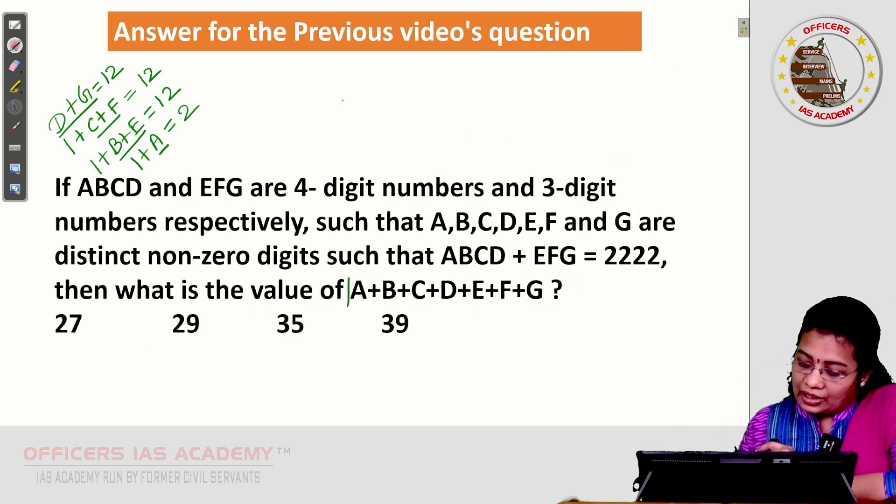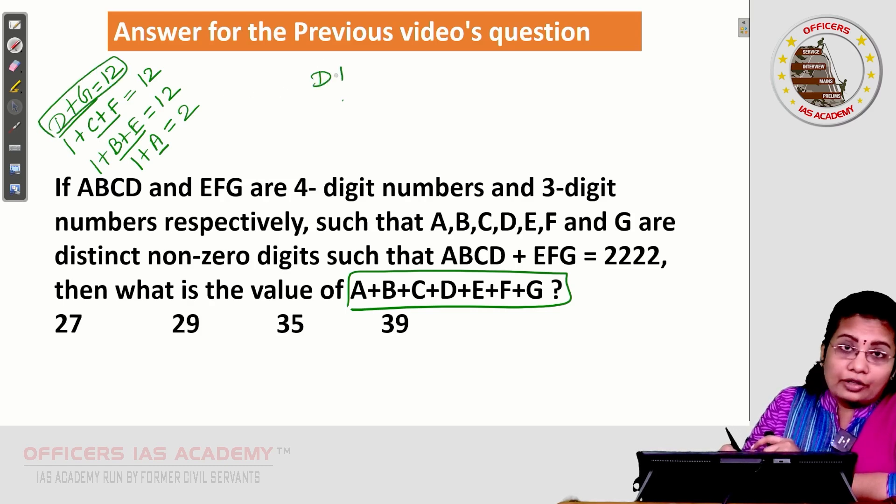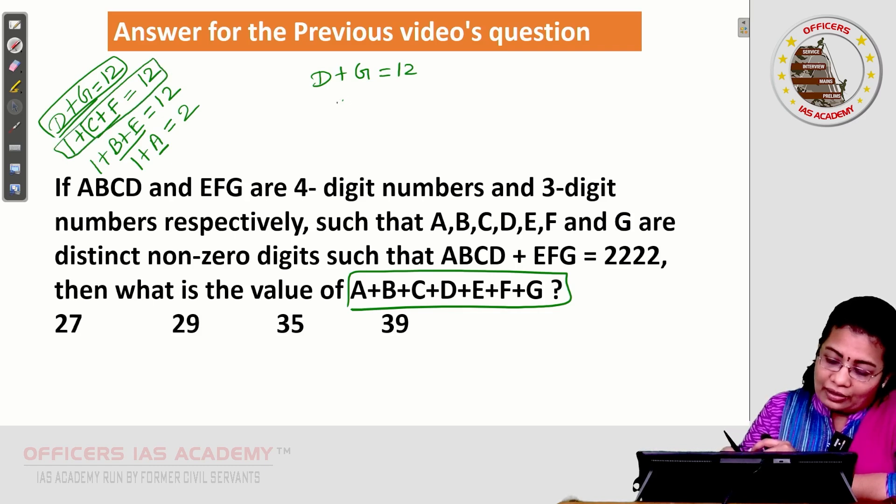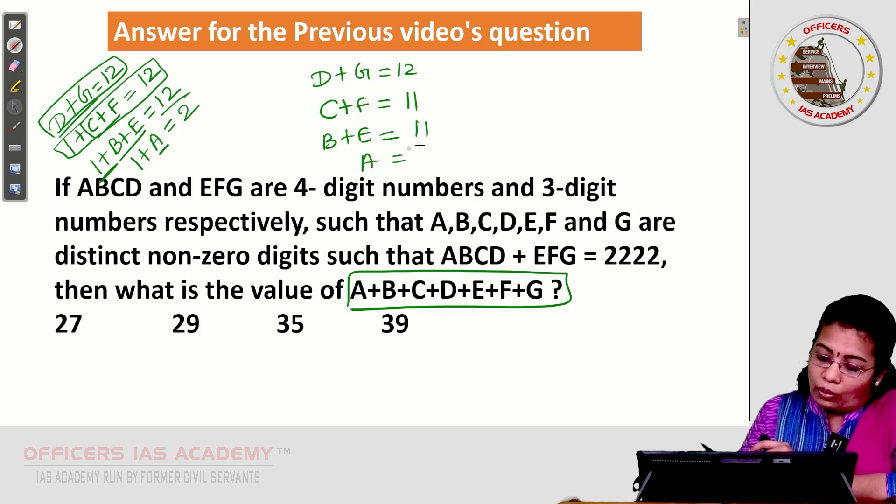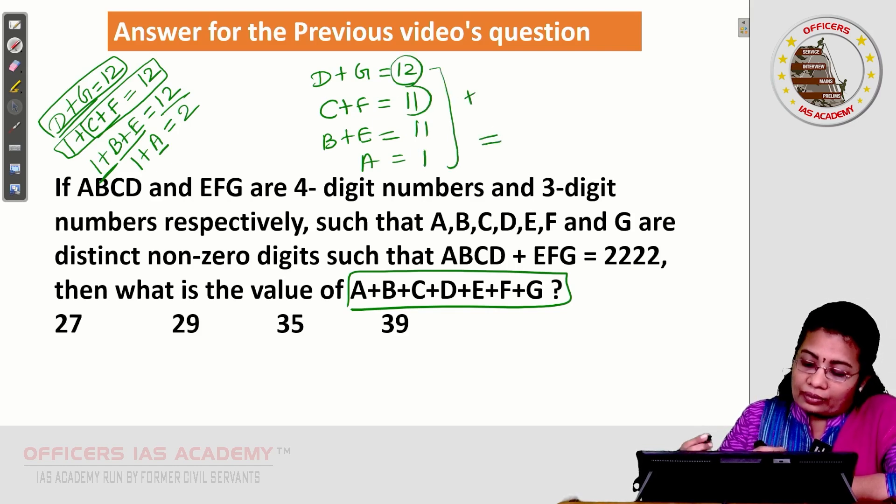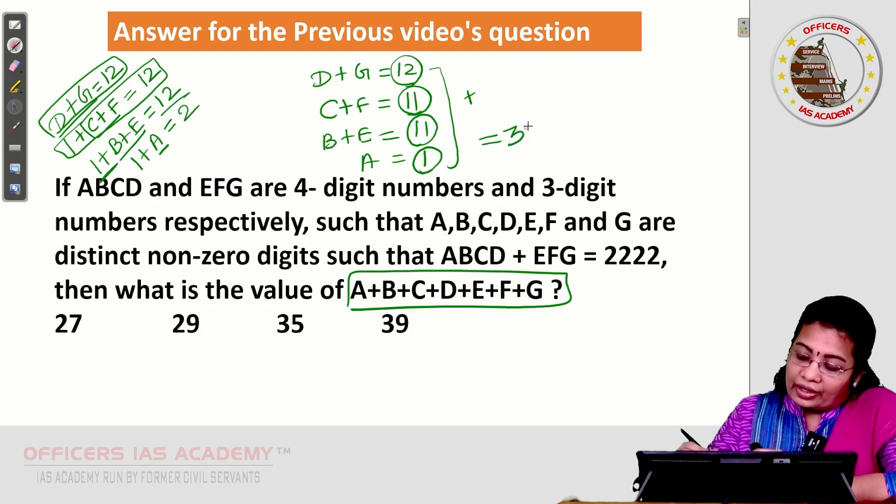Here, we want A, B, C, D, E, F, G. I collect D plus G, 12. And from here, C plus F plus 1 is 12 means what is C plus F? 12 minus 1, 11. B plus E, again this 12 minus this 1, 11. Finally, A is 2 minus 1, 1. Collect all the things together. 12 plus 11, 23. 23 plus 11, you will get 34. 34 plus 1, 35. The answer for this question is 35.